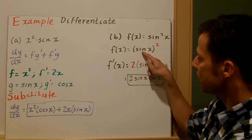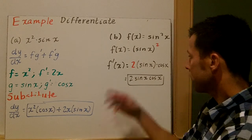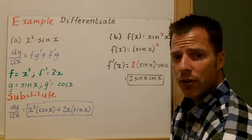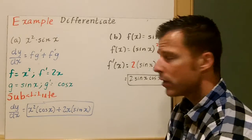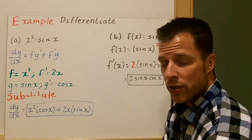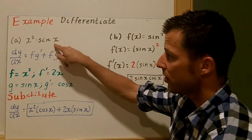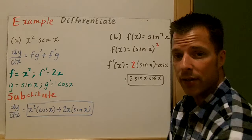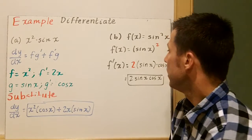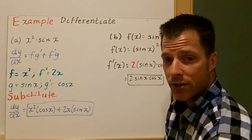Multiply the number out front times sine of x, and times the derivative of the inside. A lot of times when we look at trig functions, we use a lot of chain rule because these are trig functions and we change the value x to something else. So we definitely need to be aware of the chain rule here. If you need to review, you can go back and watch that video.